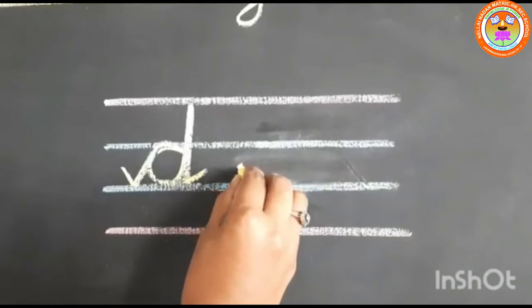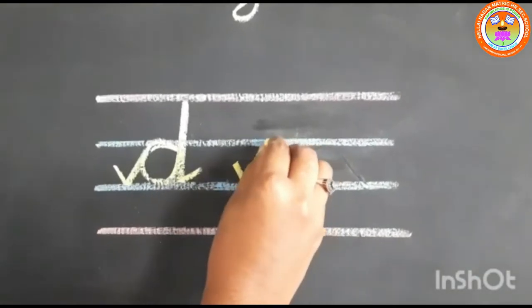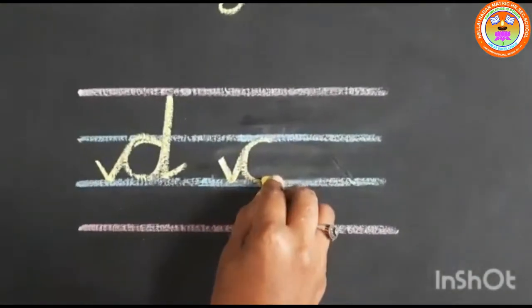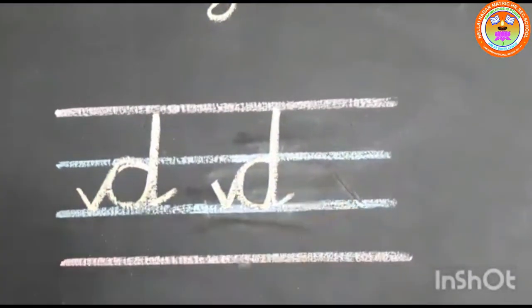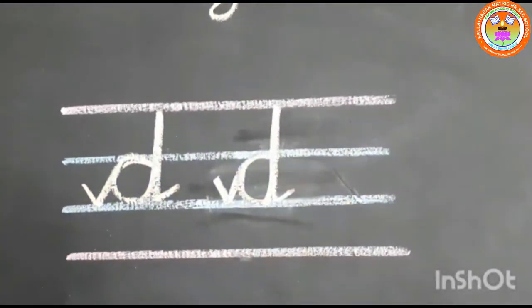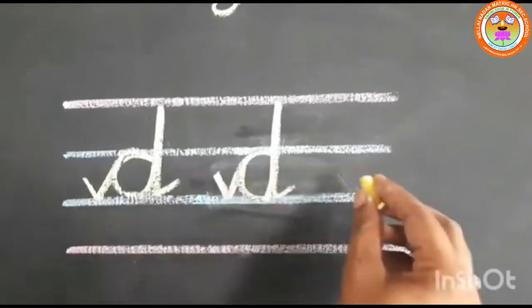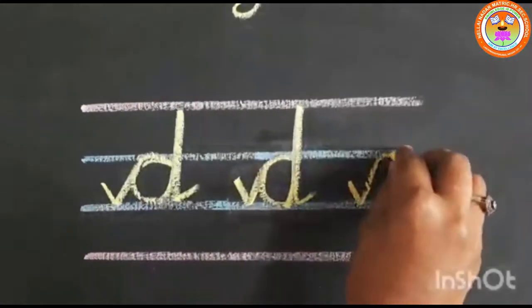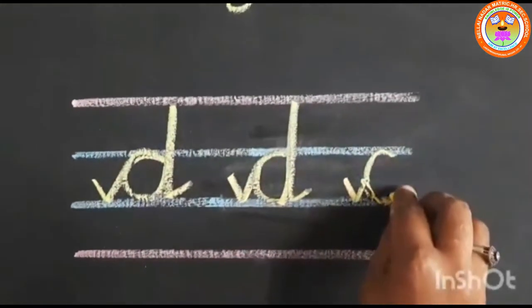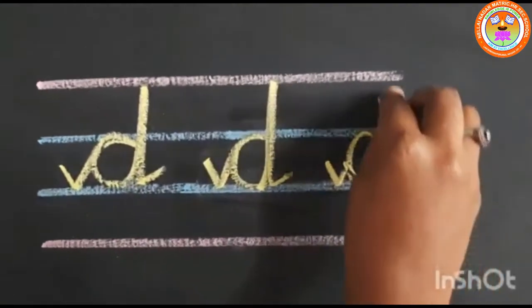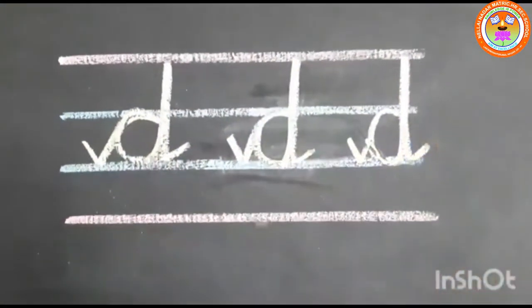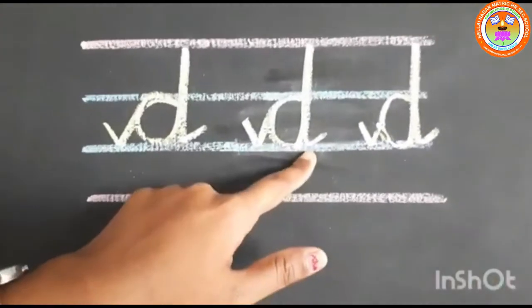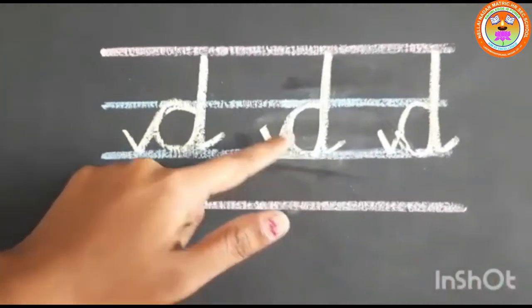Once again, pencil in the middle, first write C, and without taking the pencil, go, touch the red line and same line come down and put tail. One more time: C, touch the second blue line, go up, same line come down and put tail. This is how we should write small letter D.